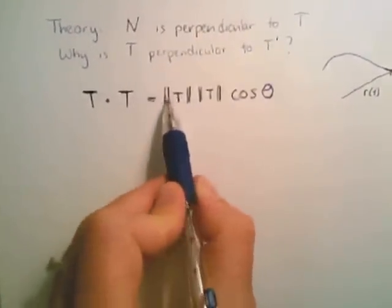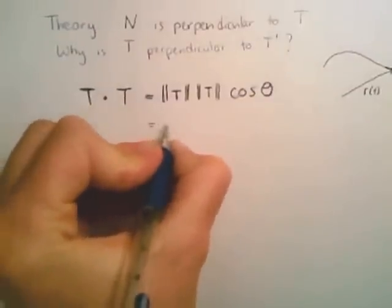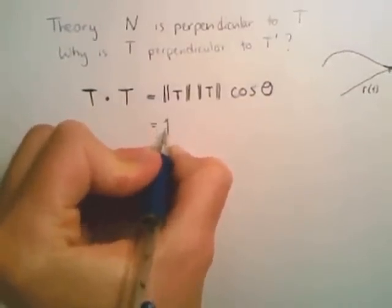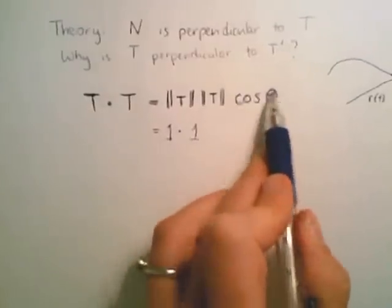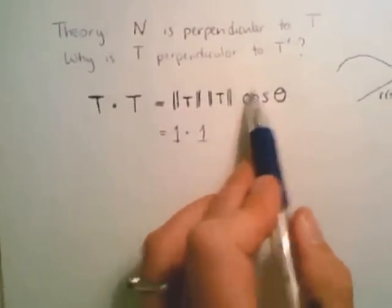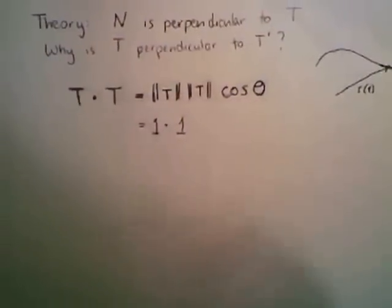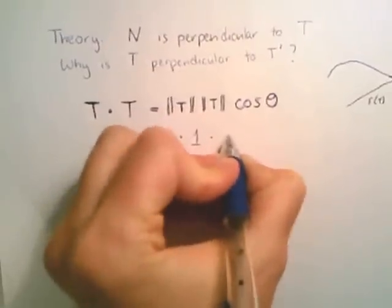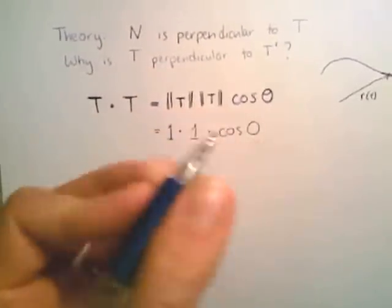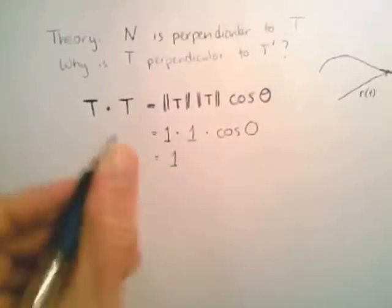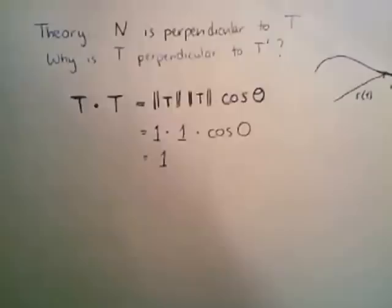So we're dealing with a very special vector in this case though. So what is the magnitude of T? T was a unit tangent vector, so we know that its magnitude is 1. So the magnitude of T is just 1 times 1 times, what's the cosine of the angle between them? Well, the cosine of that angle is going to be, it's flat. The angle is 0. So the cosine of the angle times the cosine of 0, and the cosine of 0 is in fact equal to 1. So we know that this dot product is equal to 1.